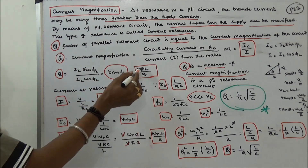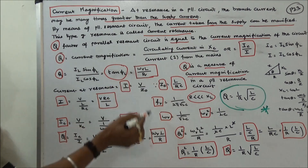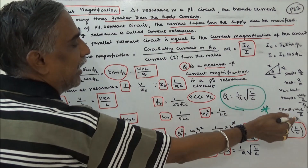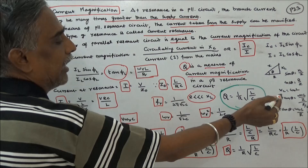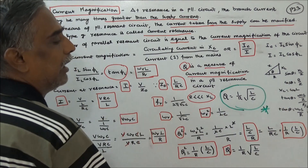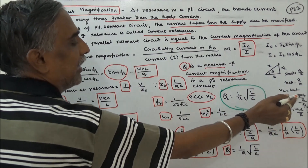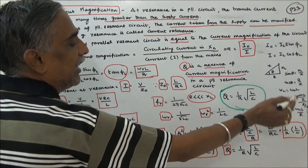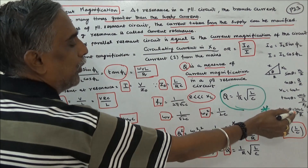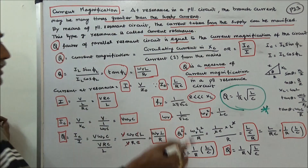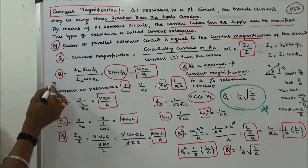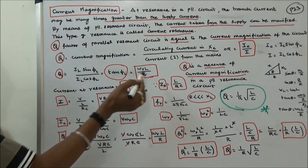tan(θL) is equal to ωR·L divided by R. Here XL is equal to ωR·L, and cos(θ) is equal to R by Z. Simplifying and substituting the resonant frequency ω₀, we get Q is equal to ωR·L divided by R.